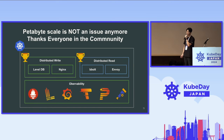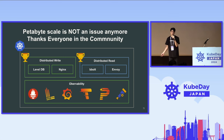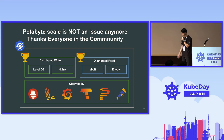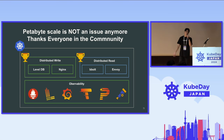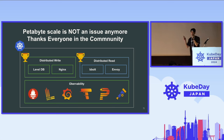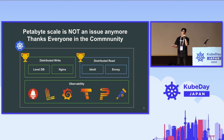Petabyte scale of metrics is not an issue anymore. On top of distributed writing, distributed reading, and observability to improve performance — LevelDB and NGINX are great products for distributed writing to get write scalability, and bbolt performs really well on distributed reading for read scalability. Thank you everyone and everything in the community.